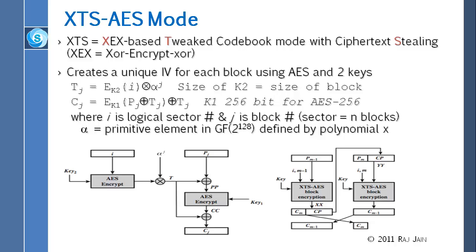You take an initial value — I is the logical sector number. Each sector is assigned a number; it doesn't have to start with 0, but normally it will. So that logical sector number is used as the initial value. You encrypt it first with key K2, and K2 is equal to the size of the block.